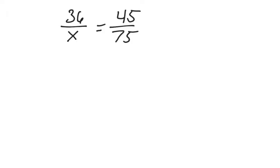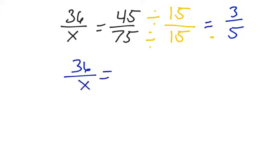So here we have it rewritten, and we notice that 45 and 75 are both divisible by 15. If we divide the numerator and the denominator both by 15, that helps us reduce it to 3 over 5. So now when we solve, we have 36 over X equals 3 over 5, and we can use cross products or cross multiplication to determine the answer.